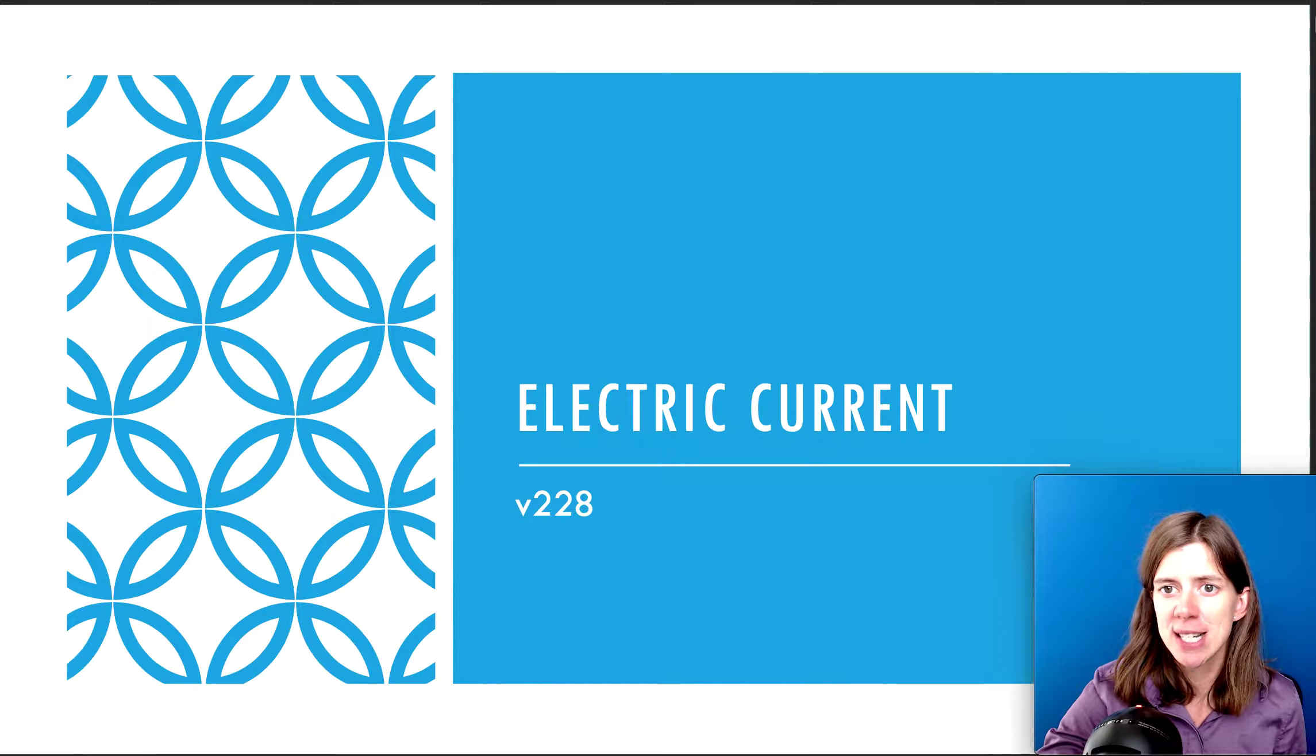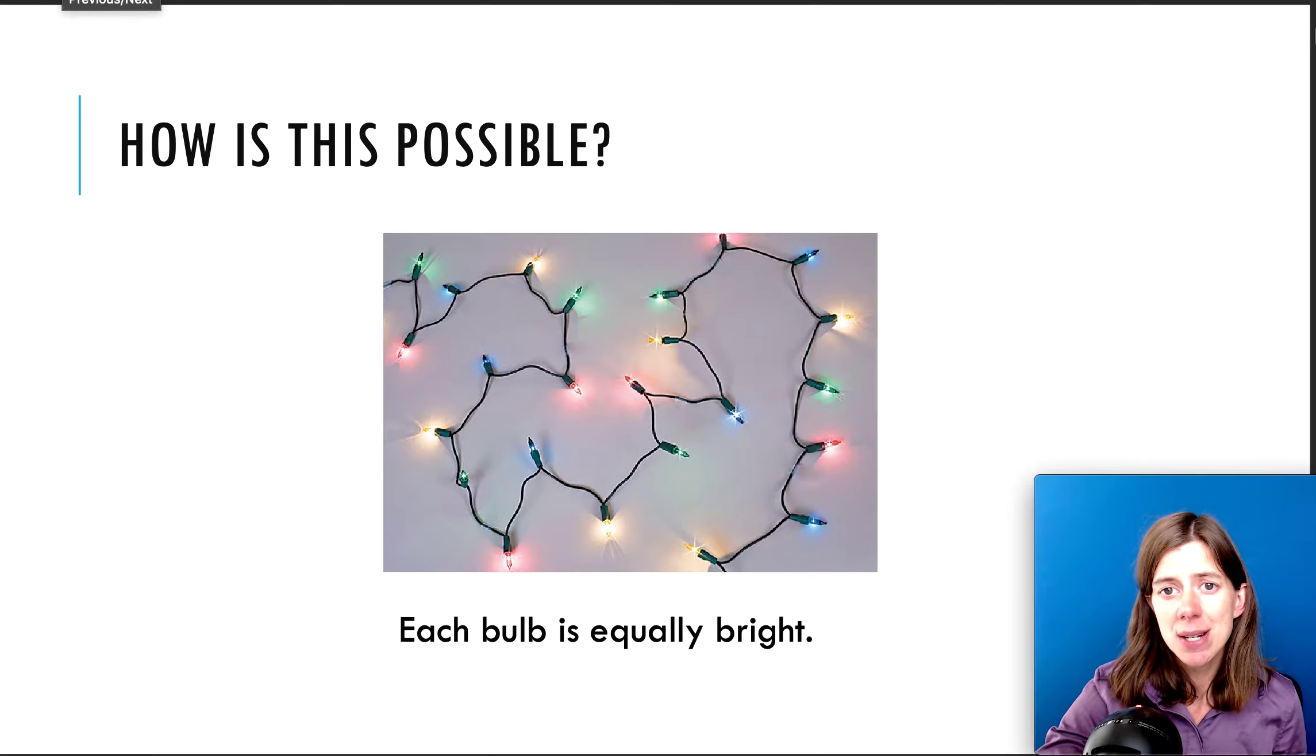So let's start this off with a question. How is this possible? Each bulb is equally bright. You've probably seen Christmas lights. And have you ever wondered why they don't become more and more dim as the charges pass through? So please put your thoughts in the comments below.